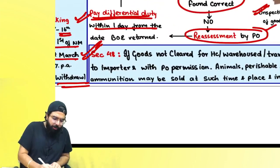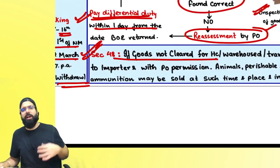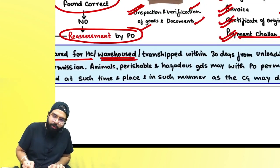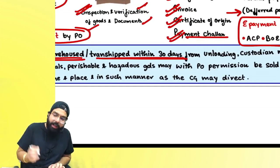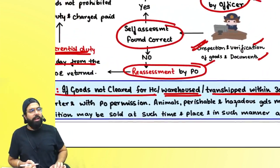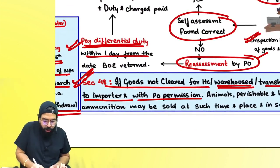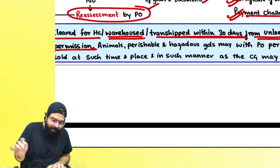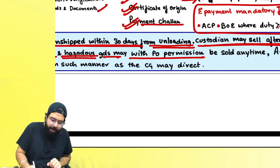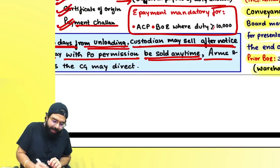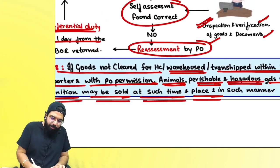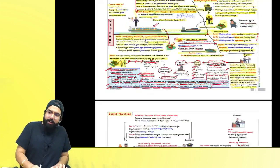Section 48 says: if goods have come to the port and you are not clearing them for home consumption, warehousing, or transshipment within 30 days of unloading, the custodian has the power to sell the goods after giving notice to the importer and with the proper officer's permission. This 30-day limit is not applicable to animals, perishable goods, and hazardous goods — these may be sold with prior permission of the proper officer at any time. Arms and ammunition may only be sold at such time, place, and manner as the central government may direct.